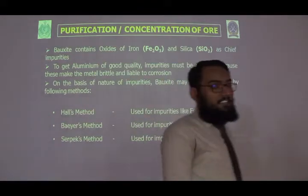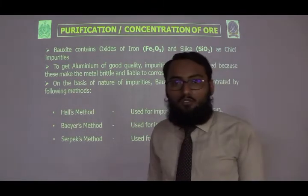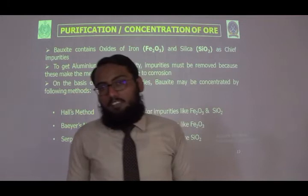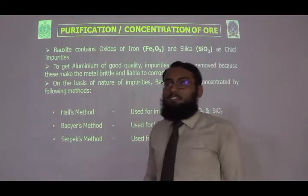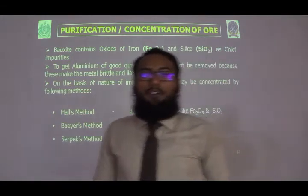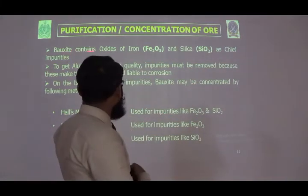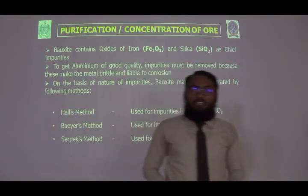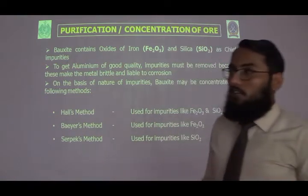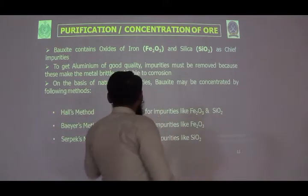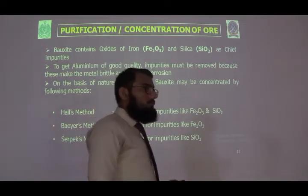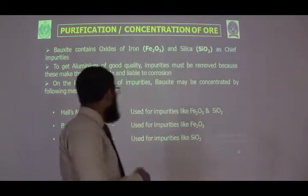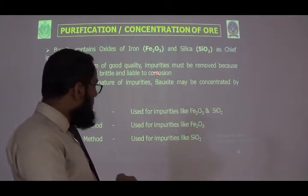For purification and concentration, the chemical impurities must be removed. In bauxite, there are two main impurities: iron oxide and silica (silicon oxide). These impurities must be removed because they are bad for aluminium quality — if impurities remain, the aluminium will be weak and prone to breaking or rusting.